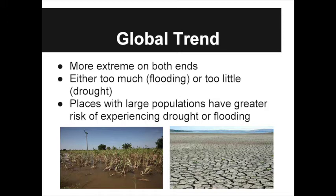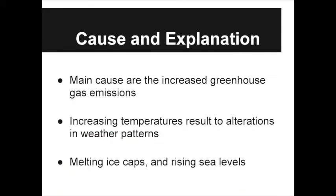So, one can say that the global trend is that it will get more extreme on both ends. The main cause for the overall increase in rainfall globally is because of increased greenhouse gas emissions. The gases that people all over the world release lead to increasing temperatures, which in turn leads to melting ice caps and rising sea levels. And because the sea levels are rising, there is more water being evaporated and later precipitated.